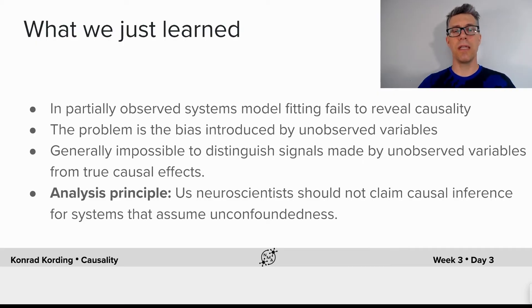Let me summarize what we just learned. In partially observed systems, model fitting fails to meaningfully reveal causality. And as the ratio of observed dimensions gets to be very large, we get to be very bad at estimating causality.